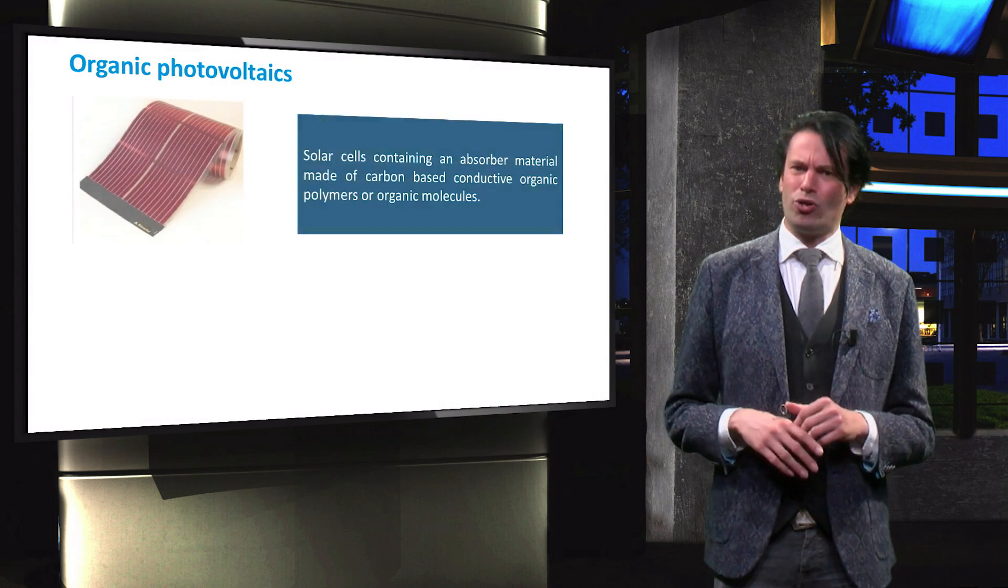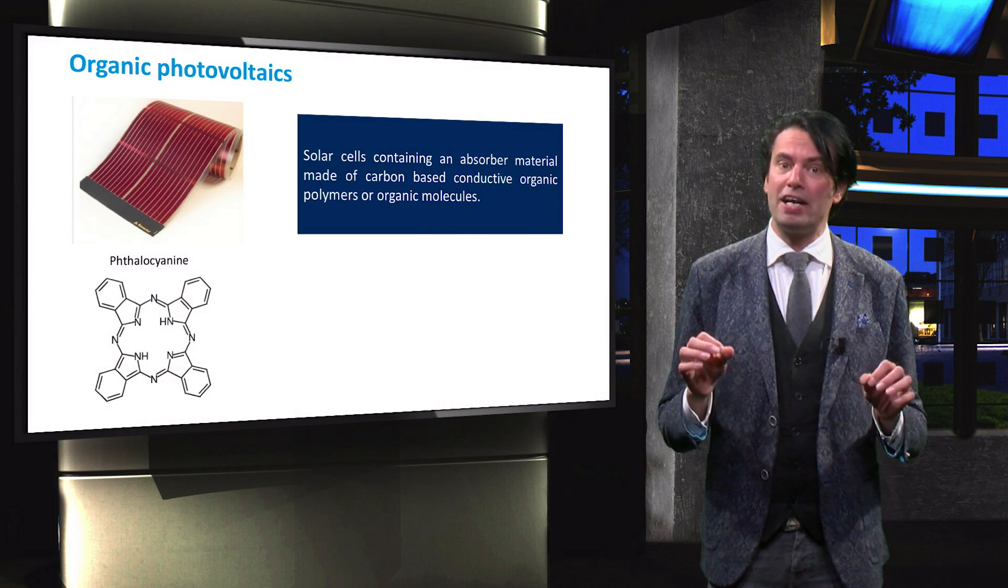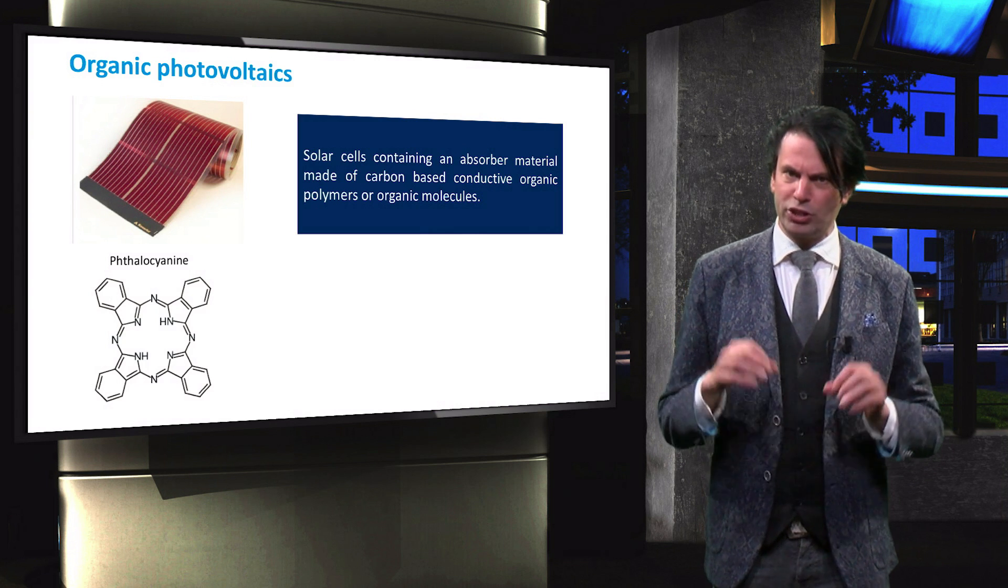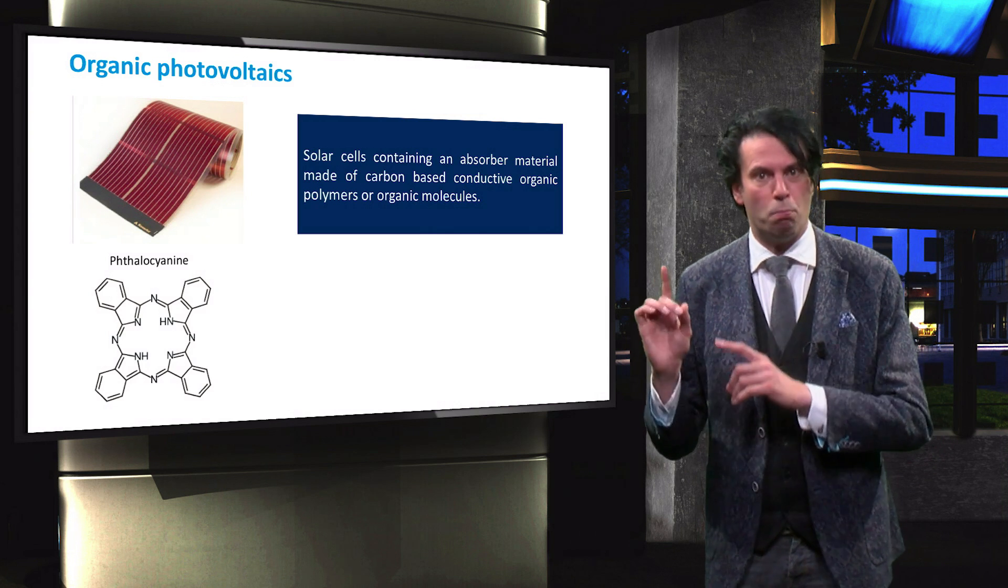So what exactly is organic PV? Organic solar cells can be defined by their absorber material, which consists of either carbon-based conductive organic polymers or organic molecules.